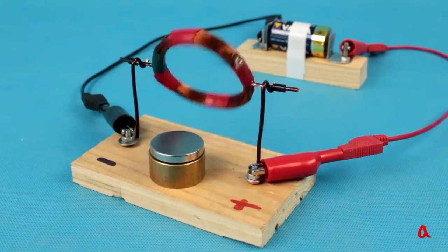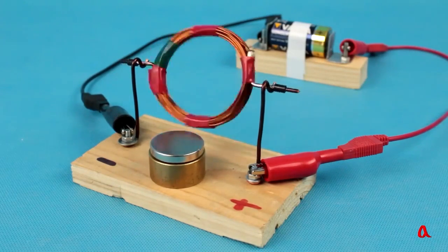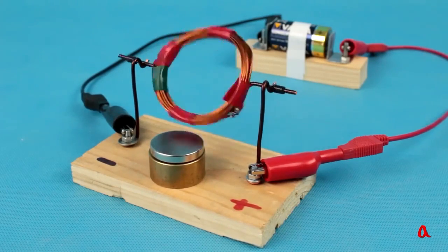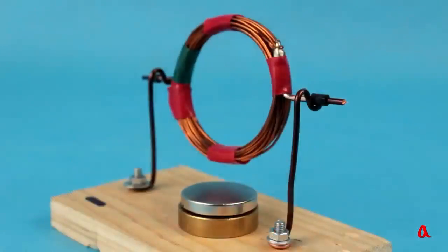We witness a mesmerizing stroboscopic phenomenon. The coil rotates at a frequency of 10 revolutions per second, creating a captivating visual display. The coil is moved by the ampere force on the electric current in the magnetic field.